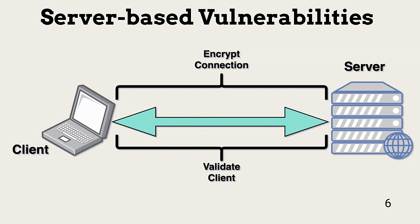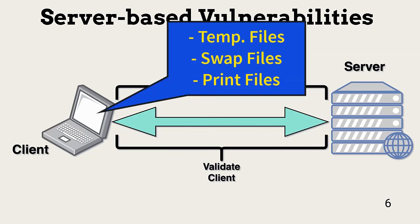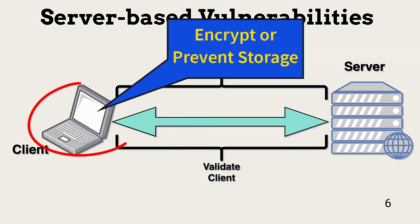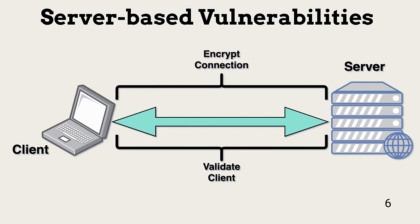Threat actors getting access to a client can see any unencrypted data. Temporary and print files are often stored on the client's local storage and are accessible by anyone with access to the device. Full disk encryption can help, but preventing local storage of sensitive information is a better safeguard. Browsers should be hardened according to vendor recommendations and best practices. Patch management is also needed to eliminate known vulnerabilities.